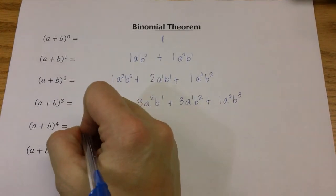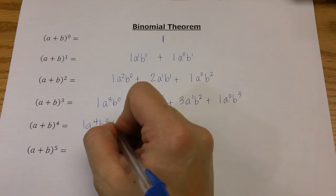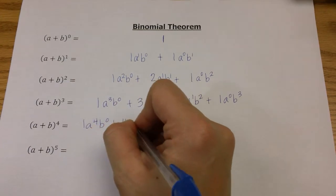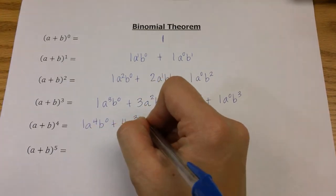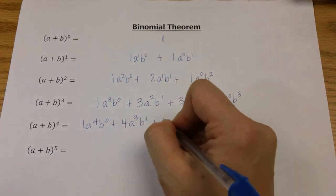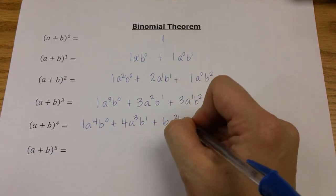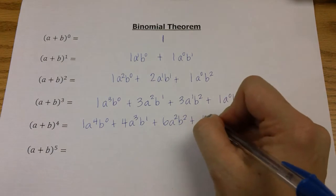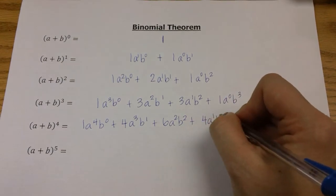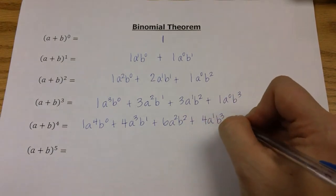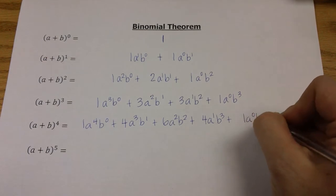For the next one, a plus b to the fourth: one a to the fourth b to the zero, plus four a to the third b to the first, plus six a to the second b to the second, plus four a to the first b to the third, plus one a to the zero b to the fourth.